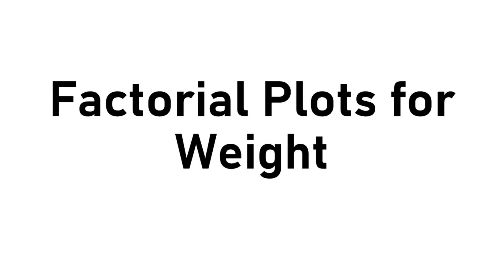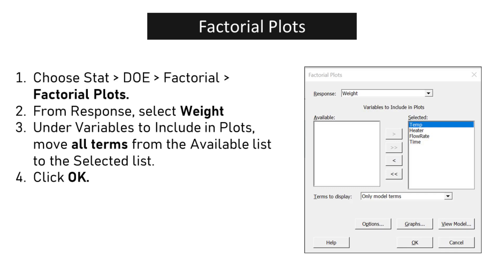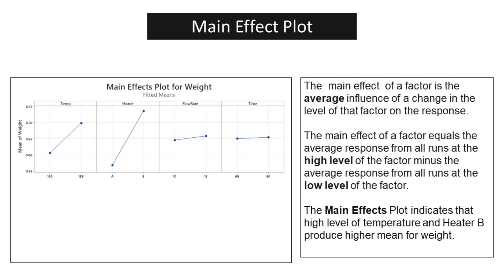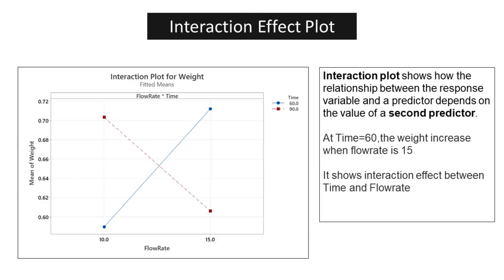For the factorial plots for weight, the main effect of a factor is the average influence of a change in the level of that factor on the response — specifically, the average response at the high level minus the average response at the low level. The main effects plot indicates that high levels of temperature and Heater B produce a higher mean weight. The Interaction Plot shows how the relationship between the response and a predictor depends on the value of a second predictor. At time equals 60, the weight increases when flow rate is 15, showing an interaction effect between time and flow rate.